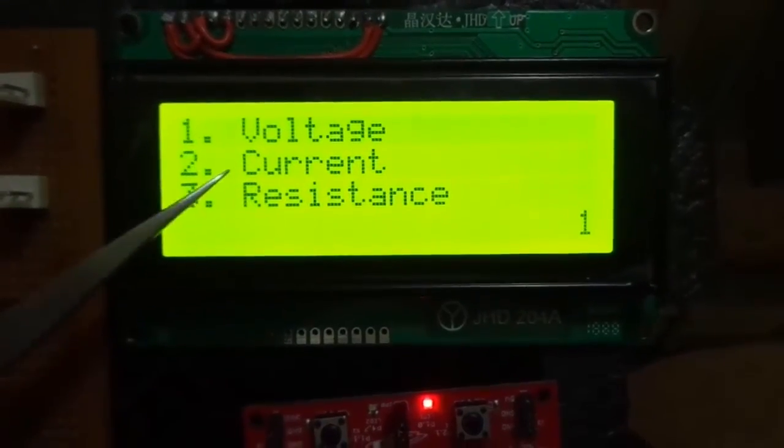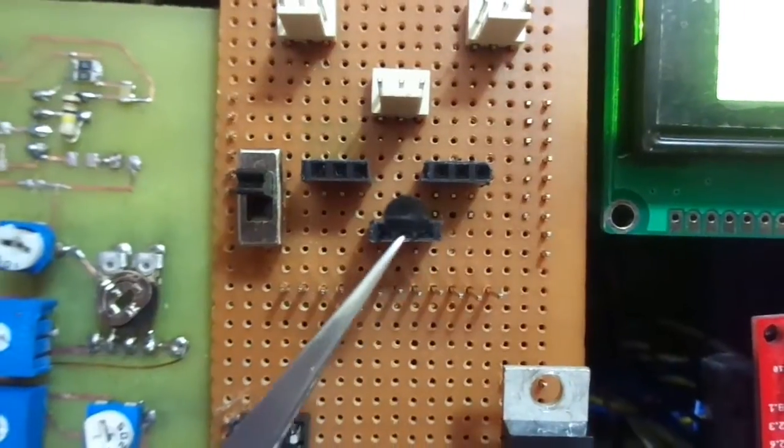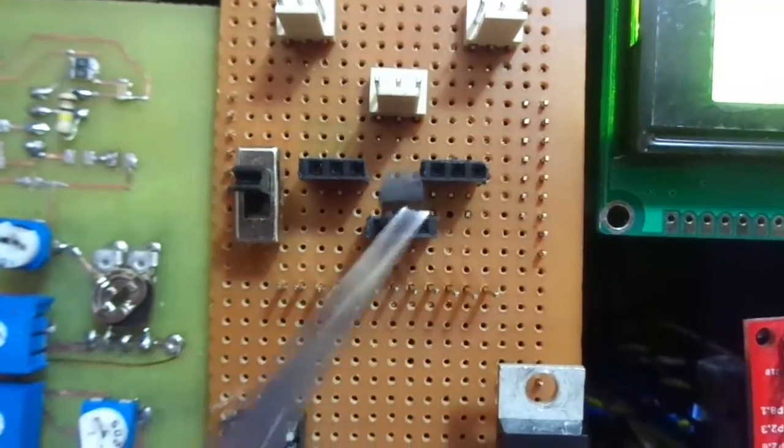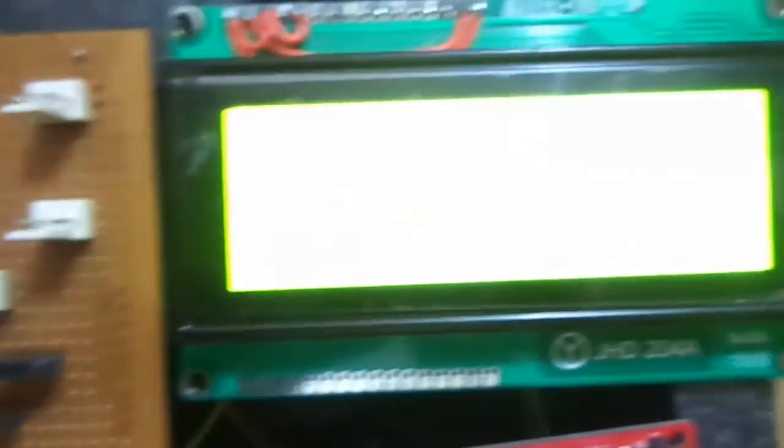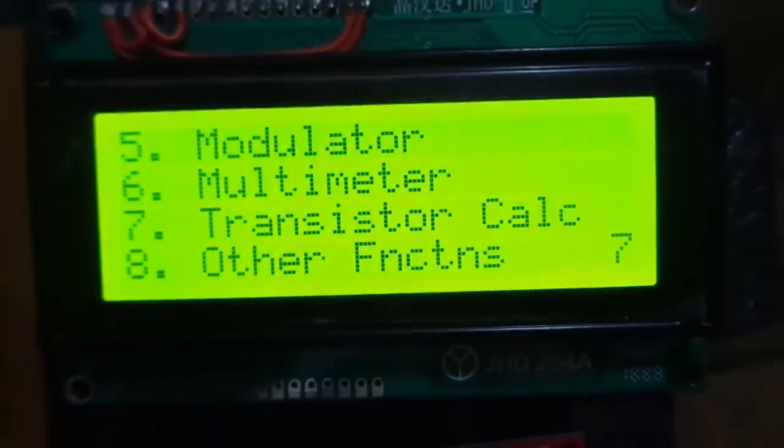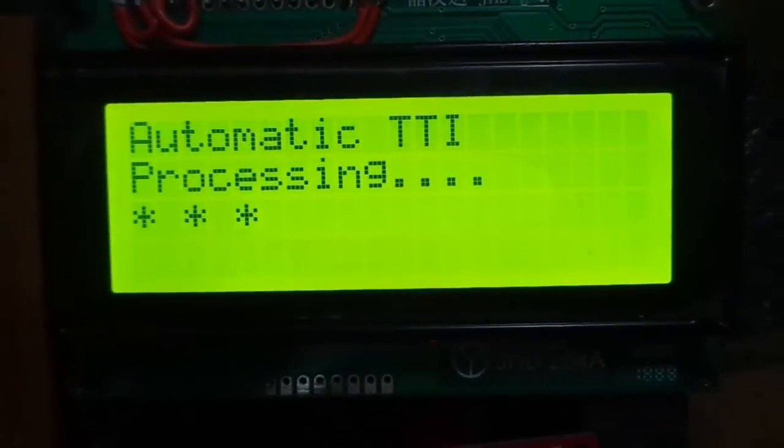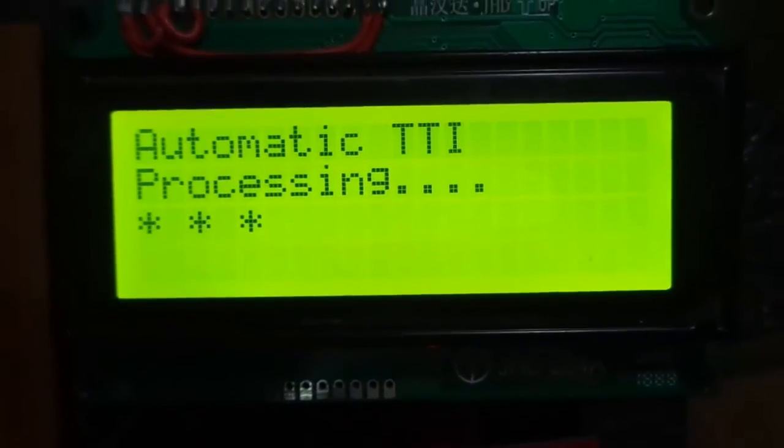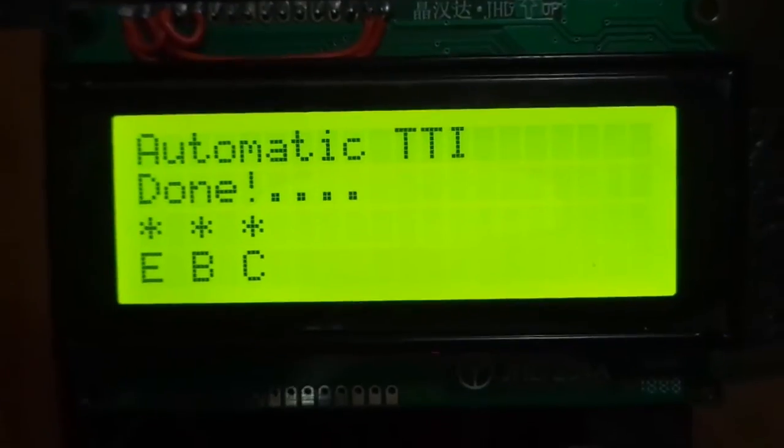It is used for measuring voltage, current and resistance. In another function, we will apply 2N3904 transistor as input and choose the appropriate option. The automatic transistor terminal identification will give the terminals of the transistor as emitter, base and collector.